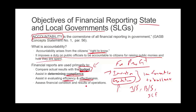We also want to assess the financial conditions and results of operations. We want to know if the government is raising enough money to meet its obligations — and we find this from the financial reports. We also want to know if they can provide services to their voters, if they can meet their obligations and continue to provide services. The need to know — the right to know — is the most important objective for state and local government, so that citizens can hold the government accountable.